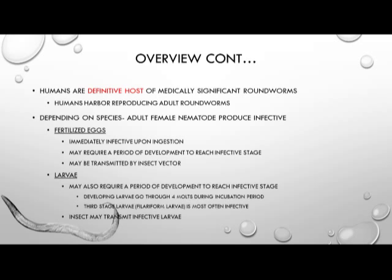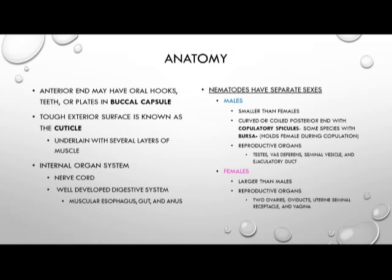The anatomy of the nematode includes a buccal capsule, which may have oral hooks, teeth, or plates. The tough exterior surface is known as the cuticle and is underlain with several layers of muscle. They have an internal organ system including a nerve cord and a well-developed digestive system, which includes a muscular esophagus, gut, and anus. Nematodes have two separate sexes. Males are usually smaller than females and have curved or coiled posterior ends with copulatory spicules. Some species have a bursa, an organ used to hold females during copulation. The curved tail allows the female to swim through and pass by the copulatory spicules, impregnating the female as it swims through.